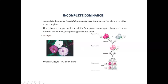In incomplete dominance, the red color is dominant over white but cannot be fully expressed. So when red is crossed with white, we get pink — not red, not white, but an intermediate third phenotype. In the checkerboard cross, we get one red variety, two pink varieties, and one white variety — a 1:2:1 ratio. This phenomenon of the dominant gene not being fully expressed, producing an intermediate phenotype, is known as incomplete dominance.